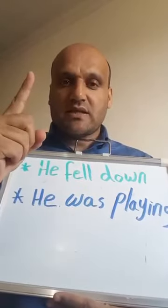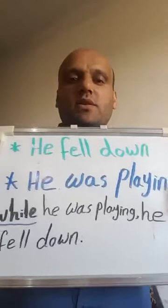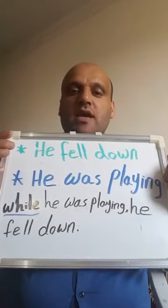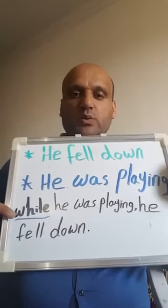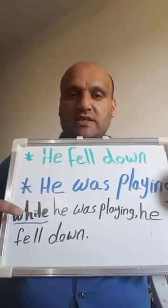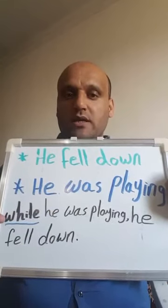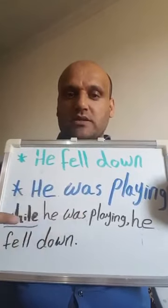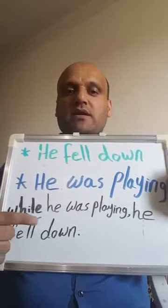How can we connect these two tenses in one sentence? Look at this sentence: 'While he was playing, he fell down.' We start with the word 'while.' After 'while,' we use past continuous: 'while he was playing.' Then we follow with past simple: 'he fell down.' So the pattern is: while + past continuous, then past simple.